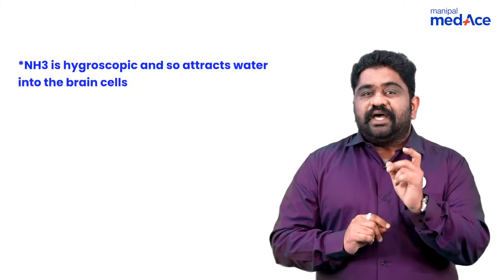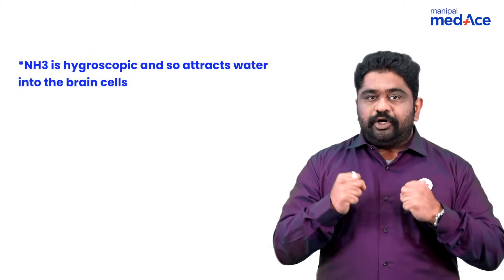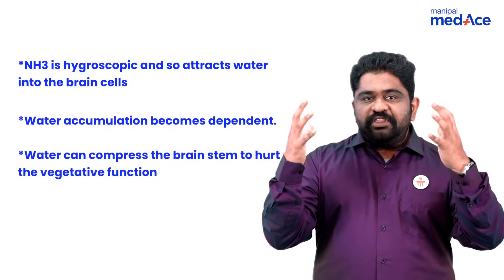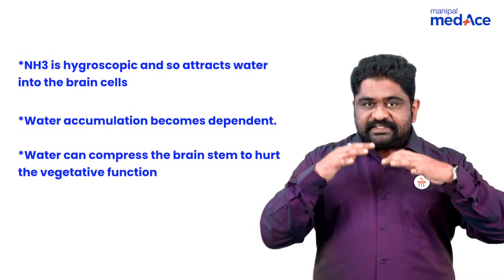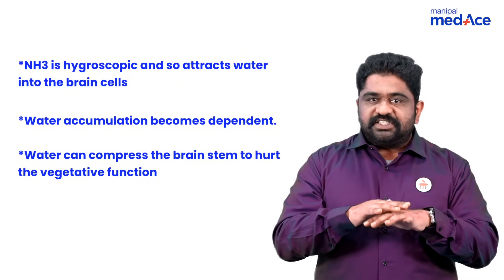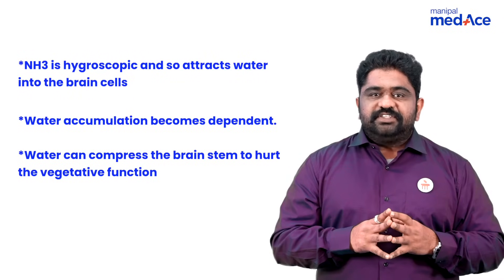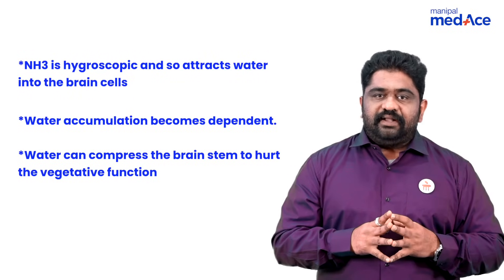Next, ammonia is highly hygroscopic. It attracts water into the brain, and when the water descends out of the bottom of the brain and compresses the brain stem, it is capable of causing cerebral edema and death. These are the reasons why ammonia can be toxic to the brain.